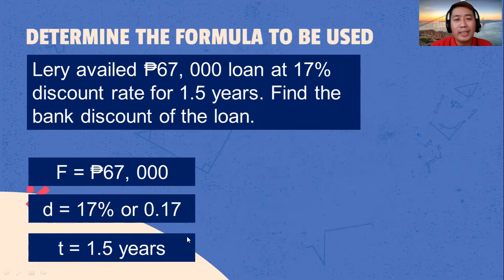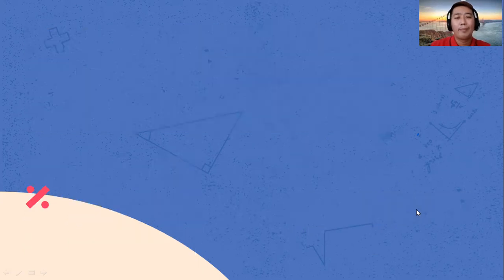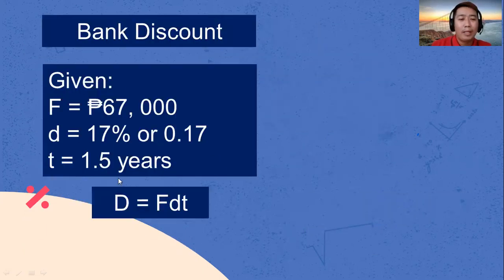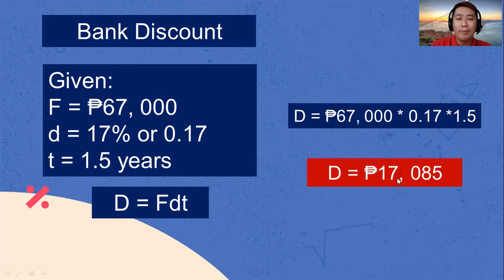Based on the given, let's identify the formula: bank discount equals maturity value multiplied by discount rate multiplied by time. Substituting: 67,000 pesos multiplied by 0.17 multiplied by 1.5. The bank discount is 17,085 pesos.